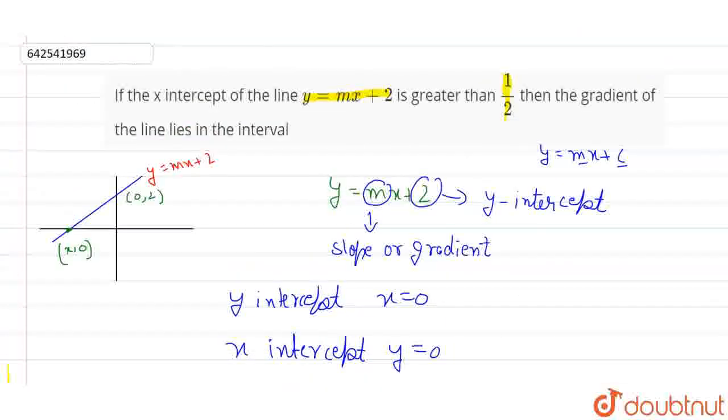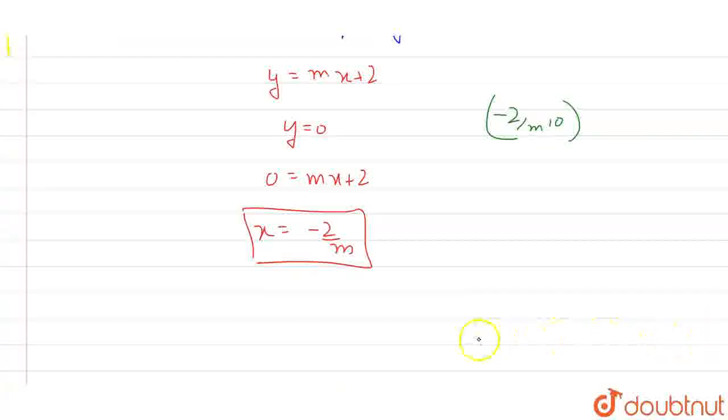What's going on in the question is that the x-intercept of the line is greater than 1 by 2, then the gradient of the line. So basically we have to find the gradient of the line. Gradient is m, so basically we have to find the range of values for m. We know that here, minus 2 by m is greater than 1 by 2. That's what the question is saying, that the gradient is greater than 1 by 2. X-intercept is greater than 1 by 2.